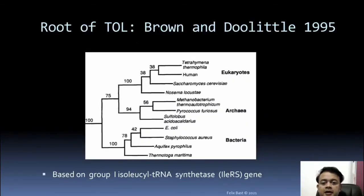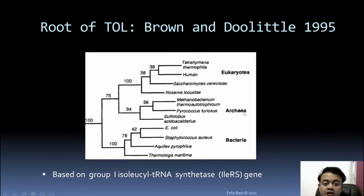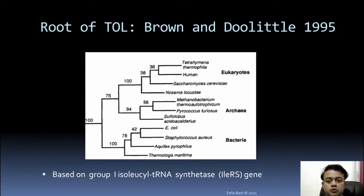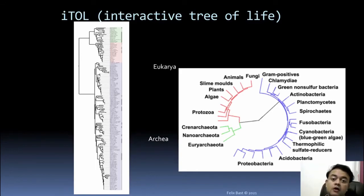Brown and Doolittle's 1995 paper, based on the isoleucine tRNA synthetase gene locus, shows Archaea and Eukaryotes as sister clades — an Archaea tree, not an Eocyte tree — while Bacteria are separate. Eukaryotes and Archaea together form a monophyletic group supported by 75% bootstrap proportion. Bacteria are monophyletic in any classification system; the key question is whether Archaea is monophyletic or not.